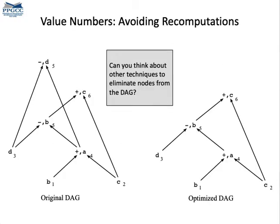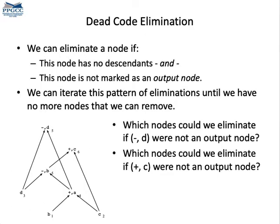In this example, again, we could eliminate the computation of variable d. But can you think about other optimizations that we can carry out in directed acyclic graphs that represent instructions within a basic block? Let me show you another optimization.